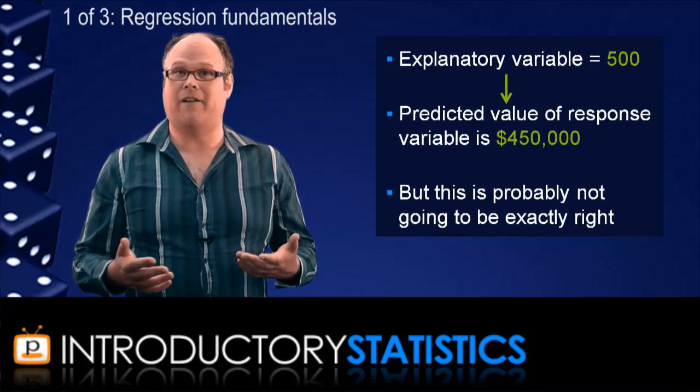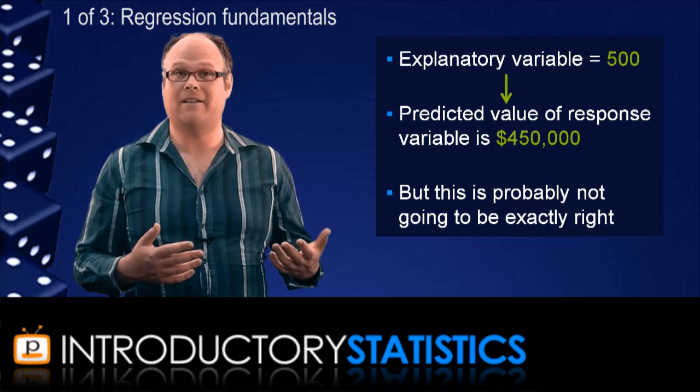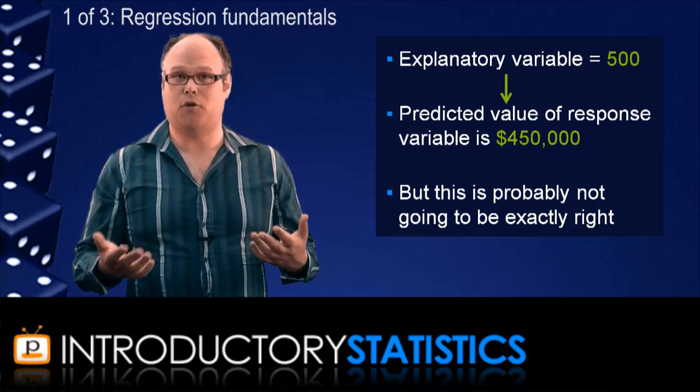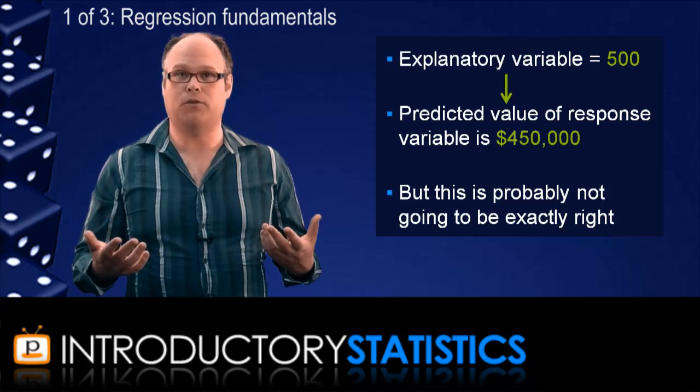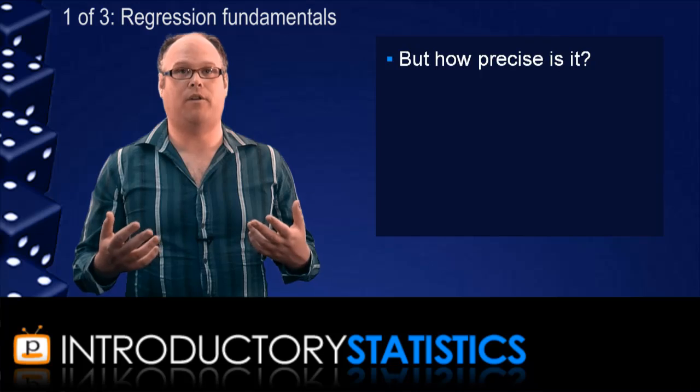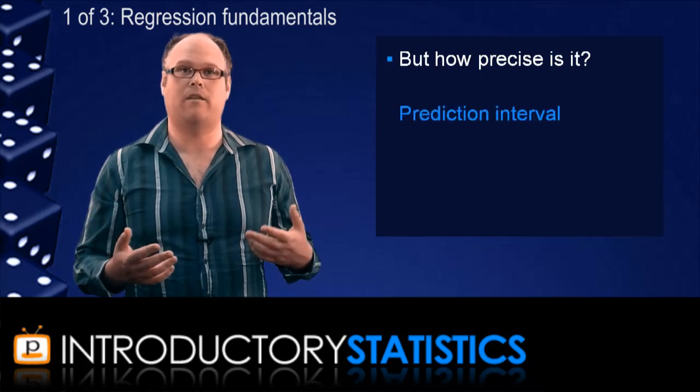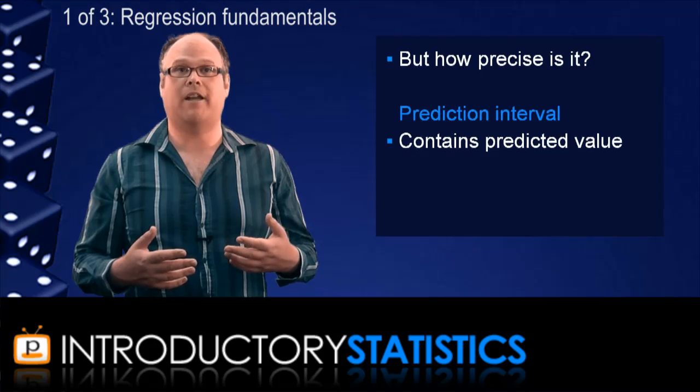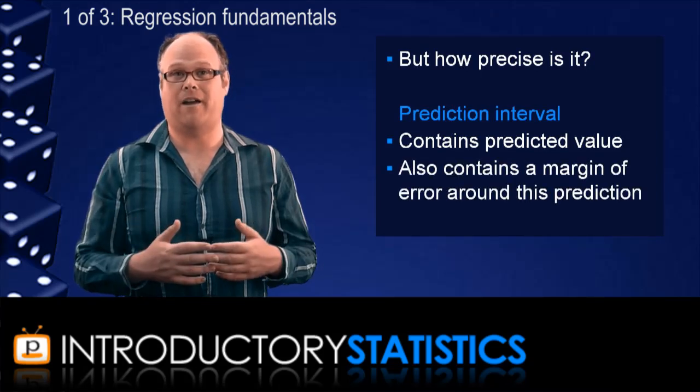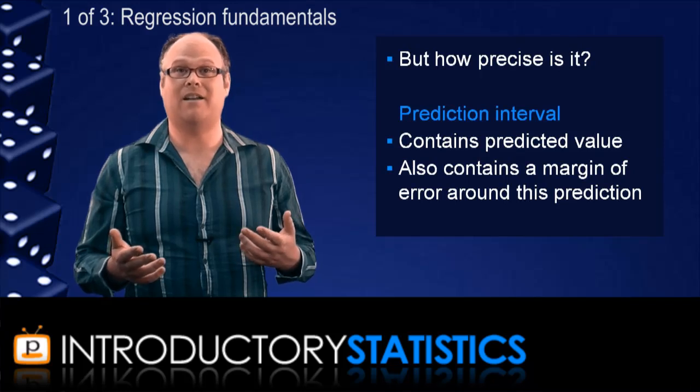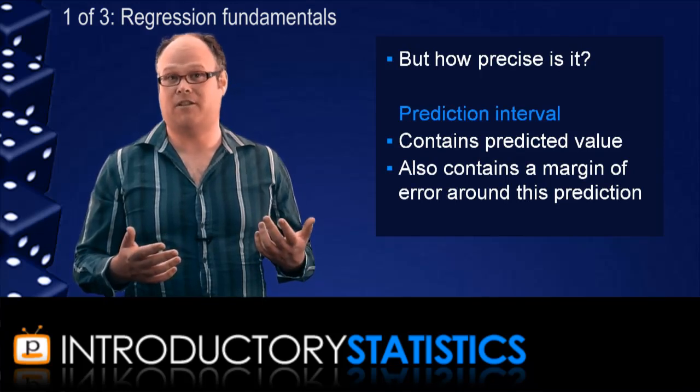Now just to repeat, that's okay. No one ever pretended that knowing the number of square feet in your home is going to tell you exactly how much it will sell for. It's okay that the regression model isn't perfect. But one thing we can do when we get a predicted value is we can measure how precise we expect that prediction to be. And we do this with the prediction interval.